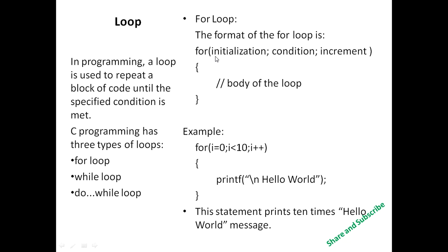This is the general format of the for loop. First write initialization, semicolon, condition, semicolon, increment. Each statement in the for loop is separated by a semicolon. After that we write the block of the for loop using curly brackets, where we define the body of the loop.